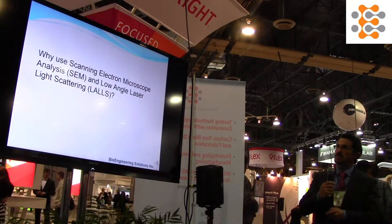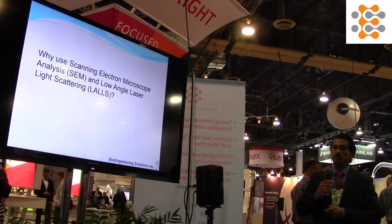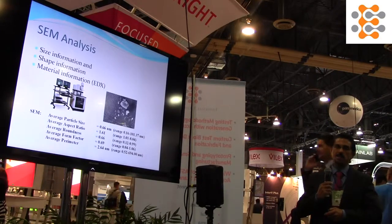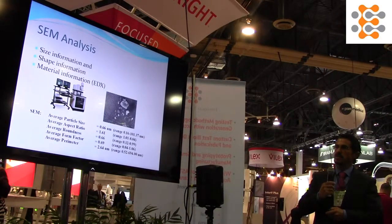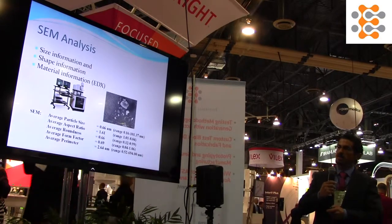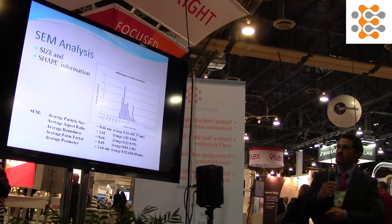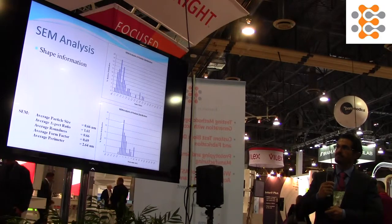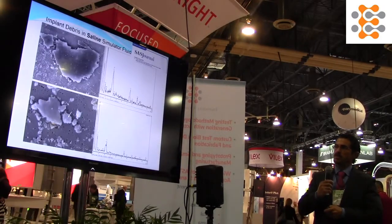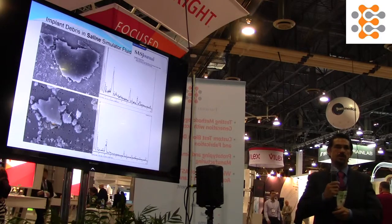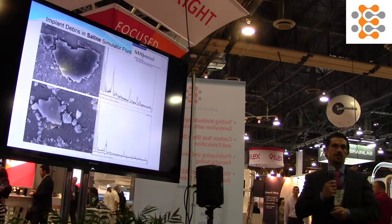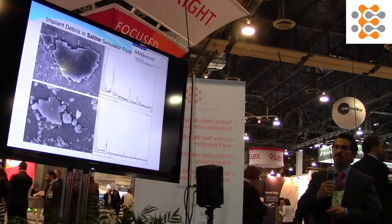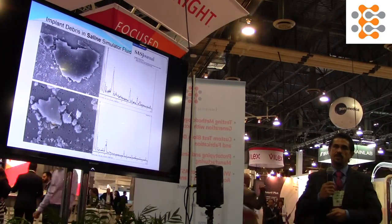Why do you use SEM analysis and low-angle light scattering — both of those together? SEM gives you the size, aspect ratio, roundness, and shape factors that the other technique cannot give you. It gives you distributions in all those ranges, including shape information. It can also look at the chemical signatures of those particles to determine if they were produced from corrosion, simply from wear of the implant, or whether they're from the grips or fixturing or from the implant itself.